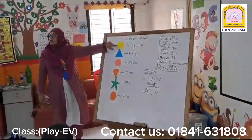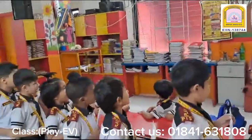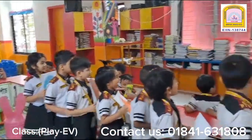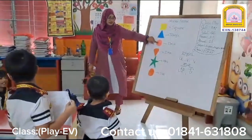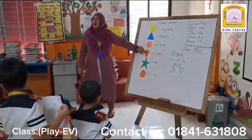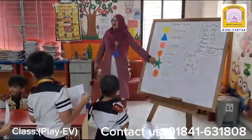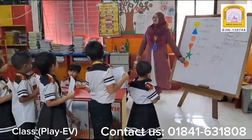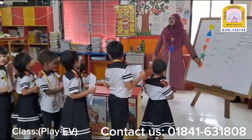Here is square, triangle, circle, chord, star, and oval, okay?